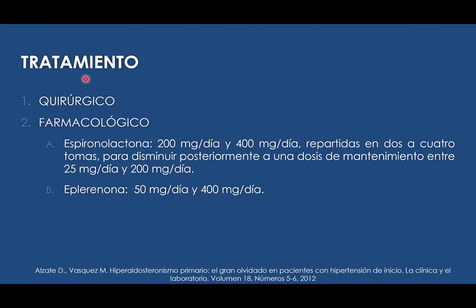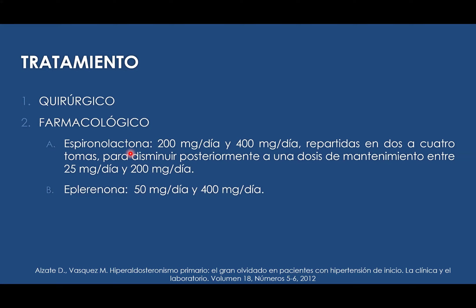Dentro del tratamiento, algunos pacientes pueden tener cura quirúrgica y otros básicamente con la espironolactona como fármaco de elección. Los pacientes con HTA resistente pasan a un esquema de segunda línea donde ya empiezan a recibir espironolactona como parte del manejo de la hipertensión arterial, aún sin saber que es un paciente con hiperaldosteronismo primario. Si damos espironolactona a un paciente con HTA resistente y en el fondo tiene hiperaldosteronismo, vamos a estar tratando de manera indirecta esta patología y el paciente empieza a mejorar su presión arterial.